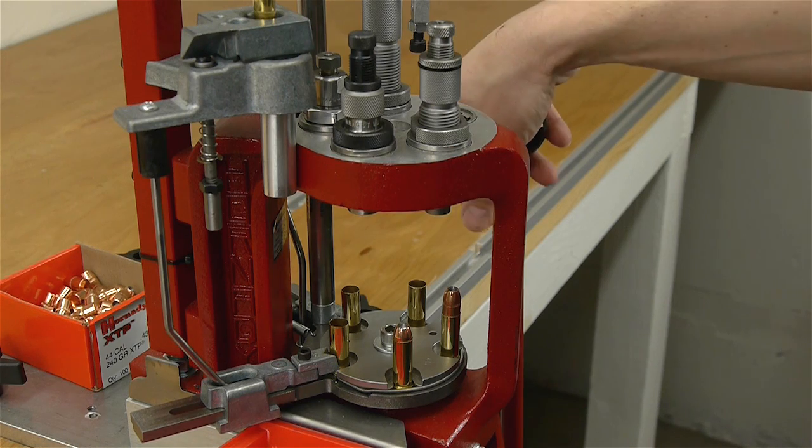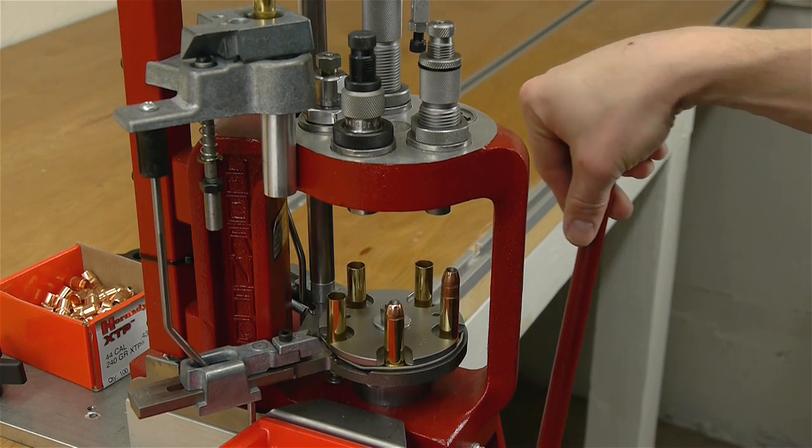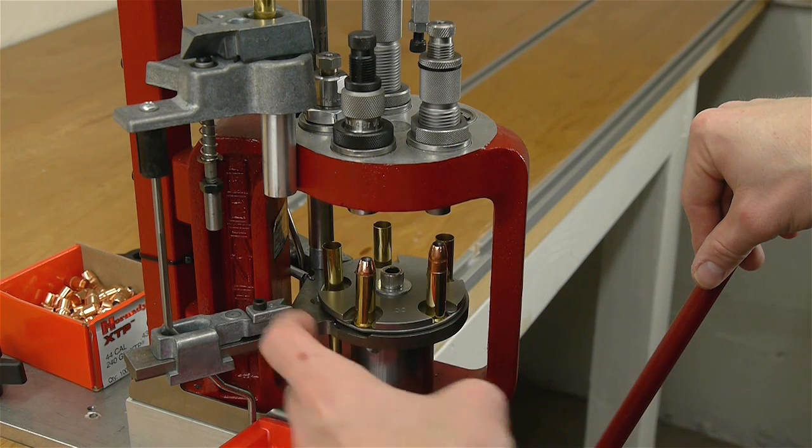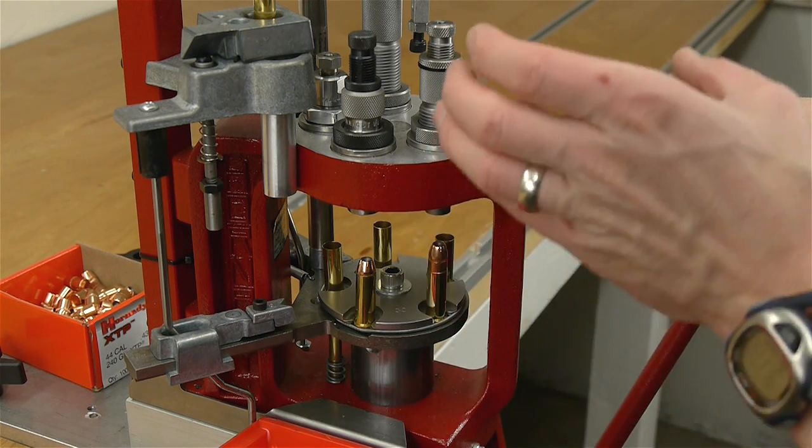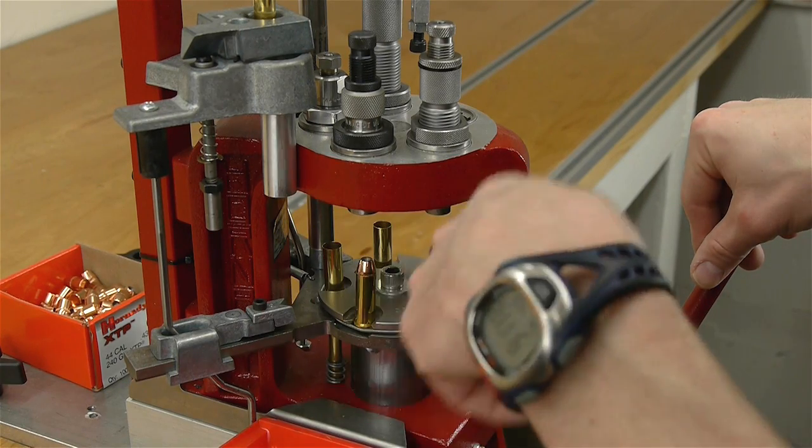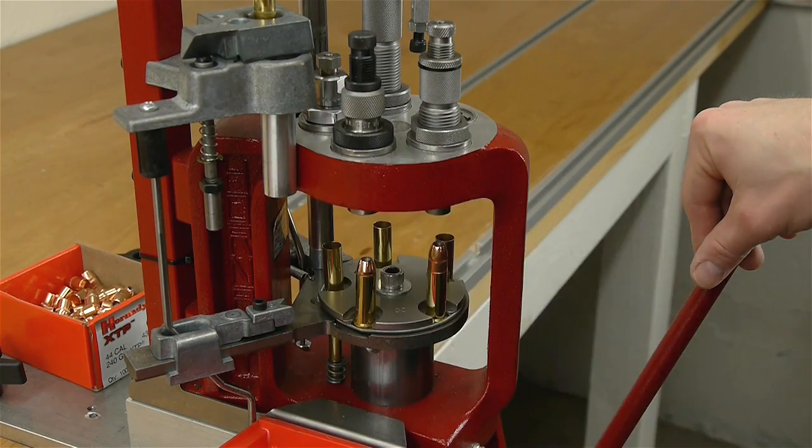So when we pull the handle we actually get a half index on the way up. So the shell plate just indexed halfway in between its old position and what its new position will be. If you take a fifth of a complete turn it's going to do half of that on the way up.